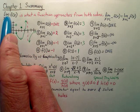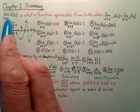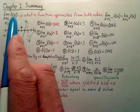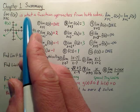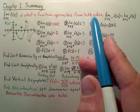Summary of Chapter 1: The limit as x approaches c of a function f(x) is what a function approaches from both sides.